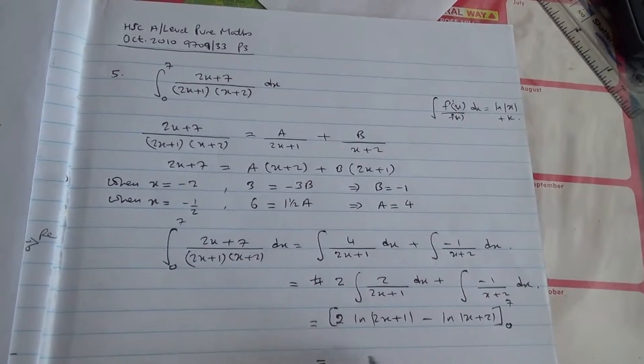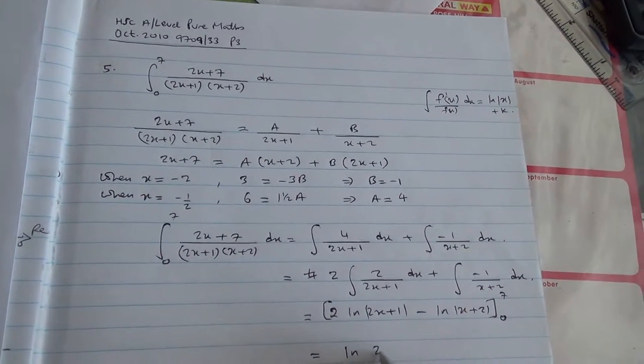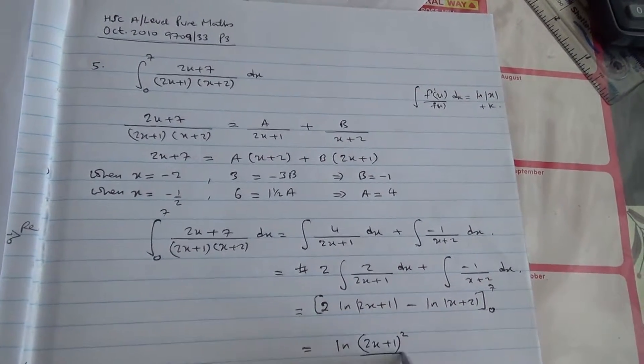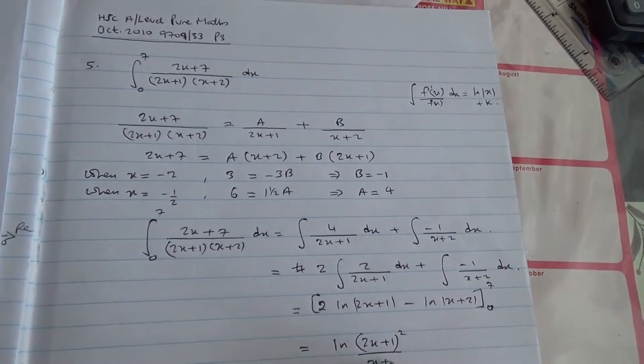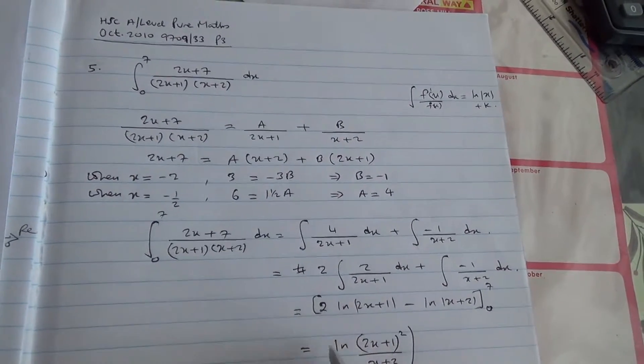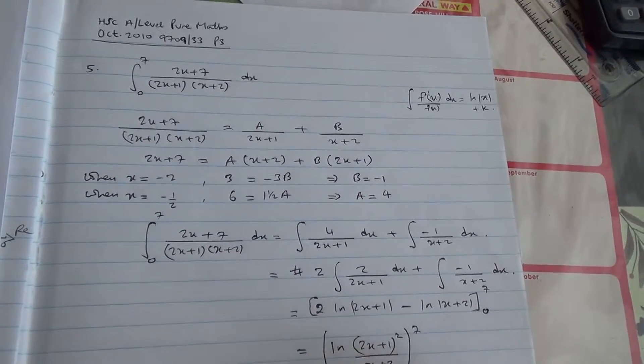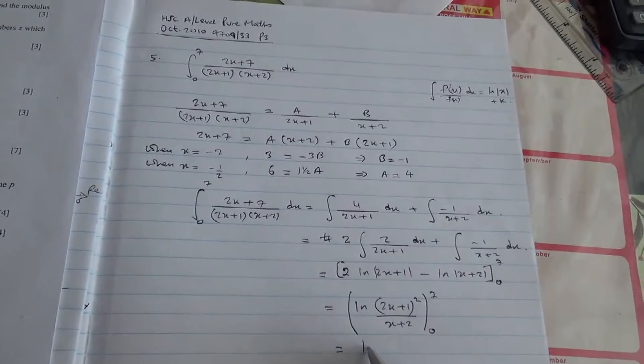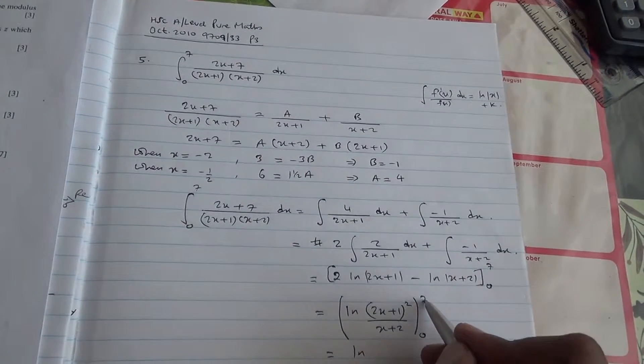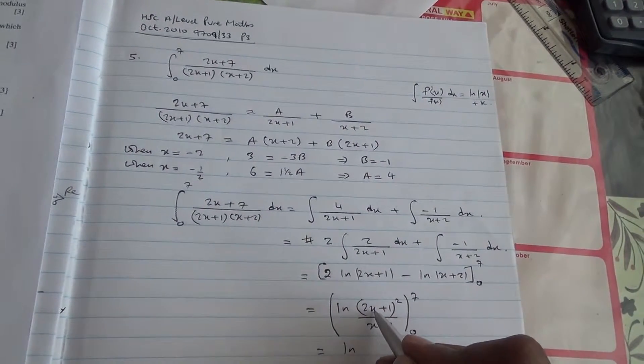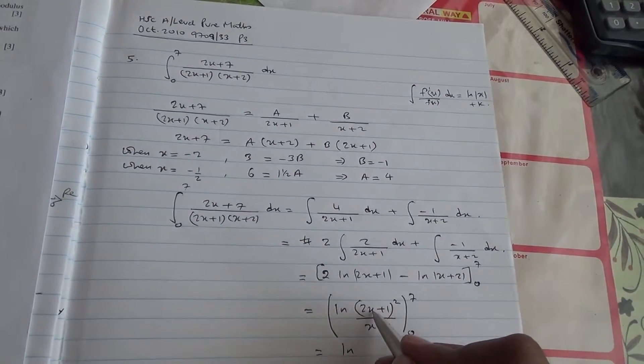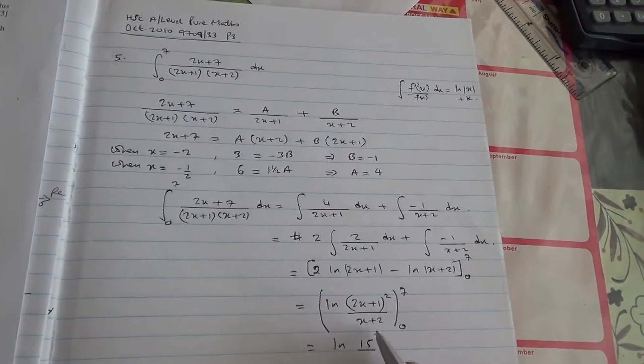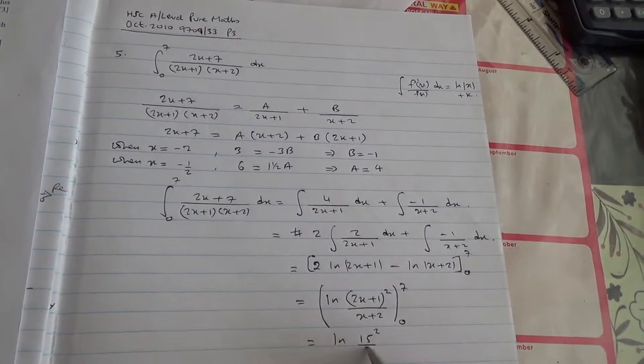So, this can go up, we can say ln 2x plus 1 to the square, when you have minus, you divide by x plus 2. So now you apply your limits, and you're going to be substituting them. 2 times 7, because this is 7, is 14 plus 1 is 15, 15 to the square divided by x plus 2, which is 2.